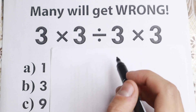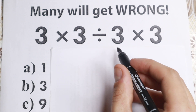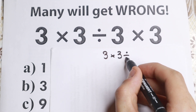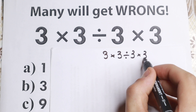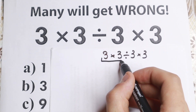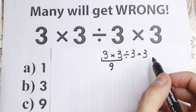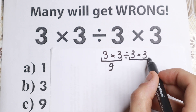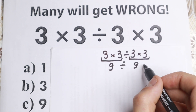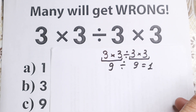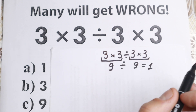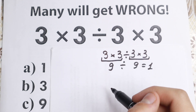So let's go ahead and try to solve it. What is the first approach? We have 3 times 3 divided by 3 times 3. Some people say: 3 times 3 equals 9, then 3 times 3 in the end equals 9, and then 9 divided by 9 equals 1. This is the first approach, and they say option A is correct. But whatever order you select is going to create a different answer, so we need to understand the correct order of operations.